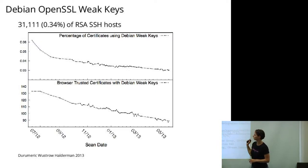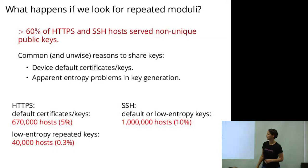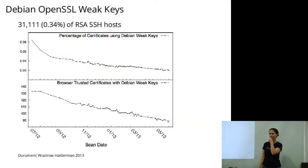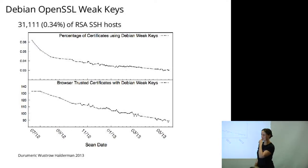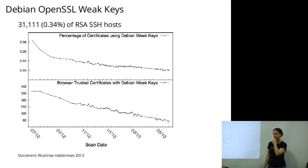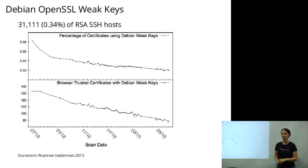The huge incidence of repeated keys is definitely not all due to the Debian problem. As of 2011, certificate authorities were still willing to sign certificates containing Debian weak keys — they were just not checking for them.